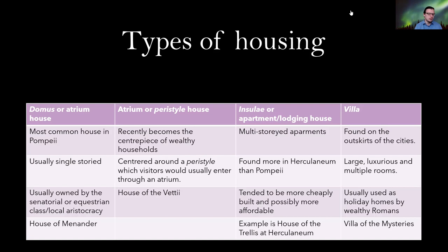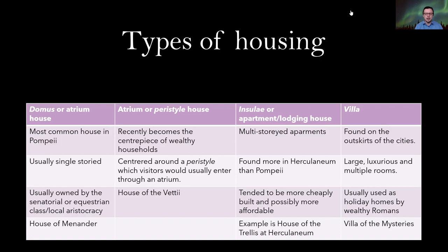The insulae or apartment/lodging house are multi-storey apartments, similar to what we think of today as apartment buildings — small, closed-in flats where you might have one family or even multiples. They could even be above shops. More are found in Herculaneum than Pompeii, meaning more people are living on top of each other in Herculaneum. They tended to be more cheaply built and possibly more affordable, so you won't see the fantastic artwork and mosaics found in peristyle dormuses. These are essentially industrial housing, and a good example is the House of the Trellis at Herculaneum.